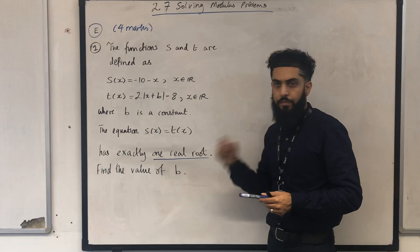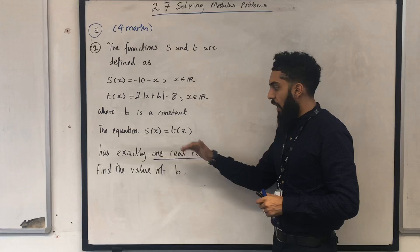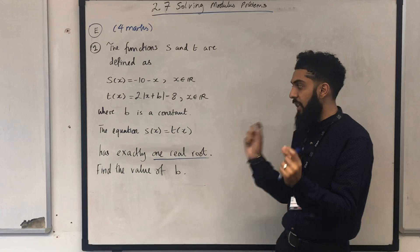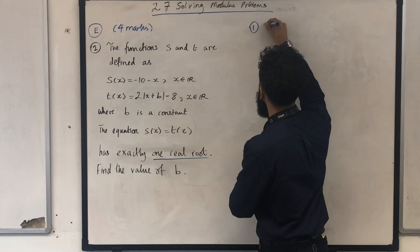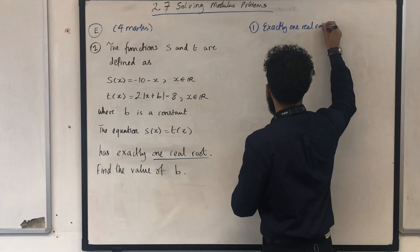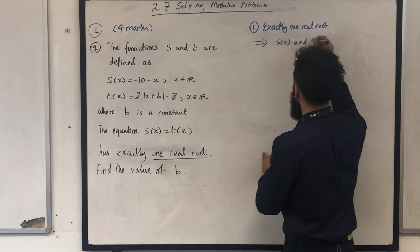My very first step is to notice that exactly one real root means that the graph of s of x and the graph of t of x will intersect once. So in my solution, step number one: exactly one real root implies that s of x and t of x intersect once.